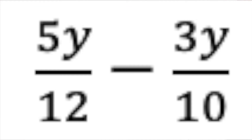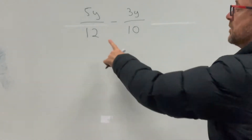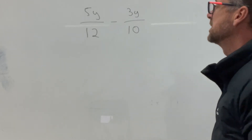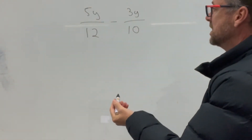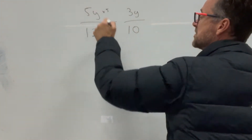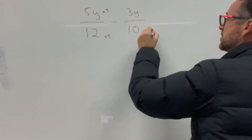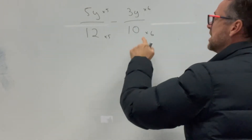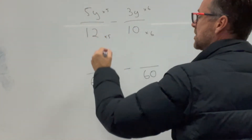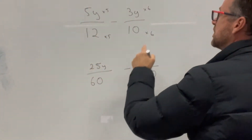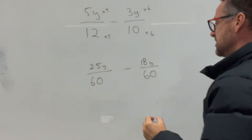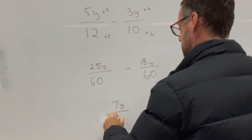Here we have 5y over 12 take away 3y over 10 — a common denominator question. We can only subtract fractions if we have common denominators. The common denominator here would be 60. So we multiply that by 5 over 5 and the other by 6 over 6. We end up with 25y over 60 take away 18y over 60. 25 take away 18 leaves 7y over 60.